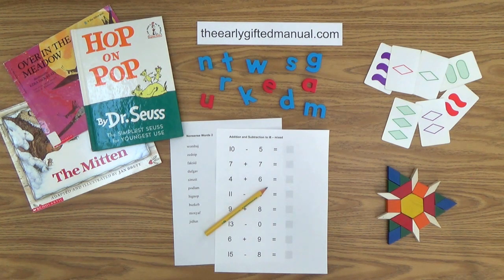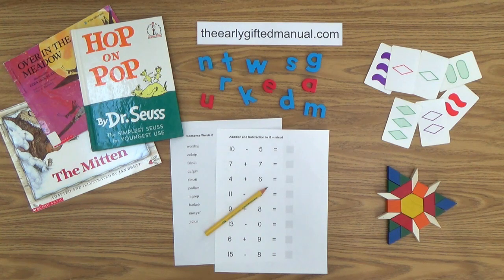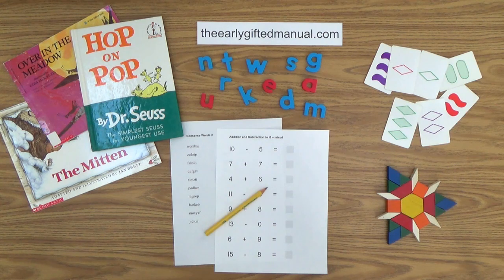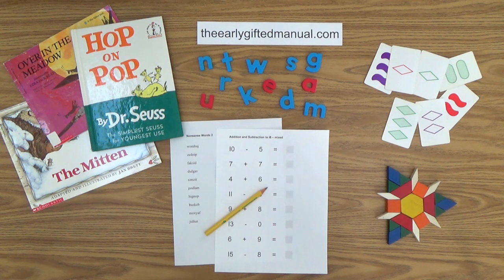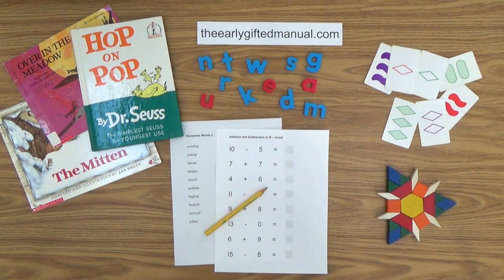As the video lessons are designed to work in conjunction with the program on my website, I ask you to, at some point, click on the URL link in the description box below, and this action will take you to theearlygiftedmanual.com. By doing that, you will be able to put this lesson and all of the video lessons here on my channel in the proper context of the total program that I am presenting to you and your child.